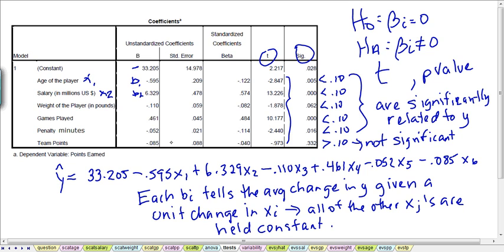So all of these values can be interpreted, but we're always interpreting them holding all the other x's constant.